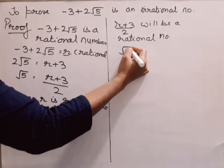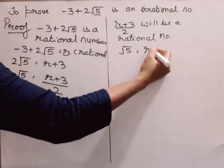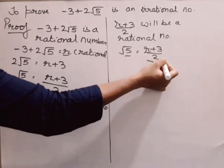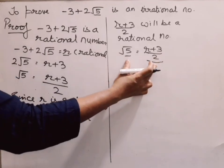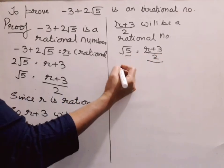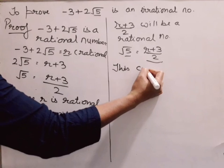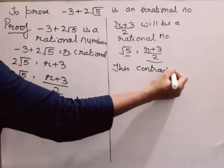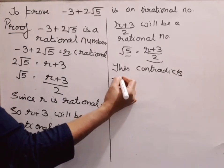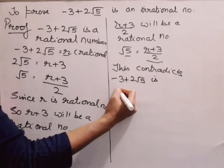We know that √5 is irrational, and here √5 equals (R + 3)/2, which is rational. An irrational number cannot be equal to a rational number — this is a contradiction. Therefore, -3 + 2√5 is irrational.